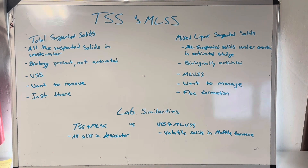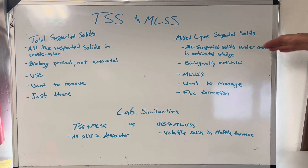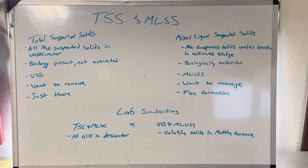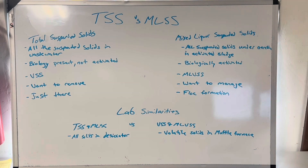MLSS is the mixed liquor suspended solids. That is a specific definition — it is all suspended solids under aeration in an activated sludge plant. You do not have MLSS in a trickling filter or a pond; this is a specific term to activated sludge. I say 'under aeration' but I'm also including the solids in the clarifier, though you shouldn't be keeping a five-foot sludge blanket in your clarifier. You shouldn't really be keeping a lot of inventory in your secondary clarifier — the little bit you have should be returning to aeration very quickly.